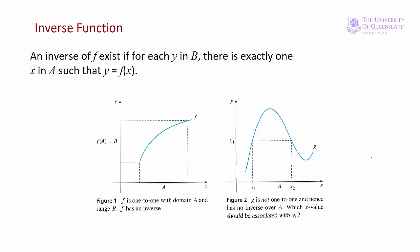Here we see what's meant by one-to-one. In figure 1, each value of x has only one value of y, and each value of y has only one corresponding value of x. That's not the case in figure 2. So f of x has an inverse function, but g of x here doesn't. To have an inverse function, a function must pass a horizontal line test as well as a vertical line test. In figure 2, g of x fails that horizontal line test.